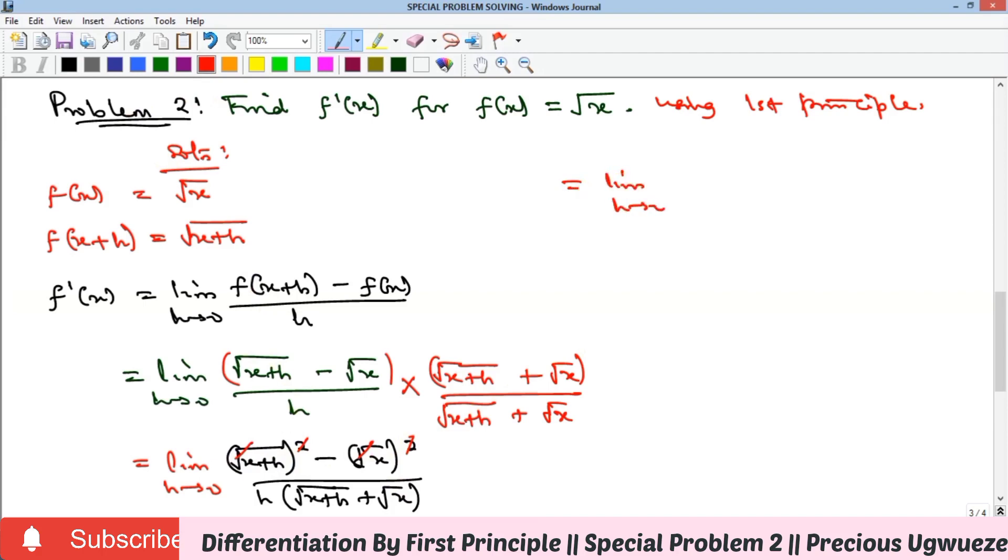We can clearly see that x will take away x, and if that happens, we have only h left. At this point, our h will cancel h, so you have only one left up here.